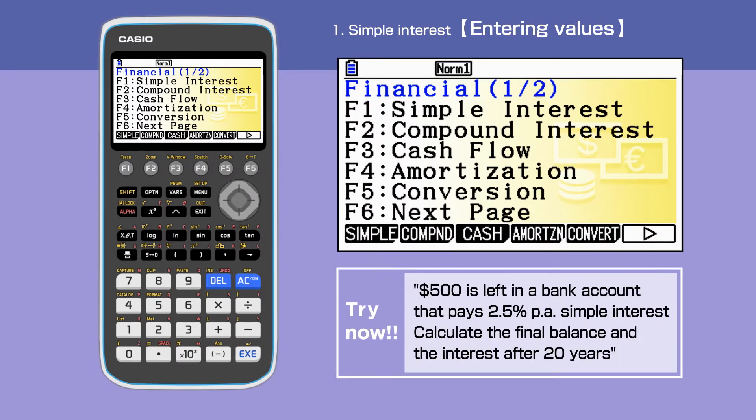Let's look at the following example. $500 is left in a bank account that pays 2.5% per annum simple interest. Calculate the final balance and the interest after 20 years.